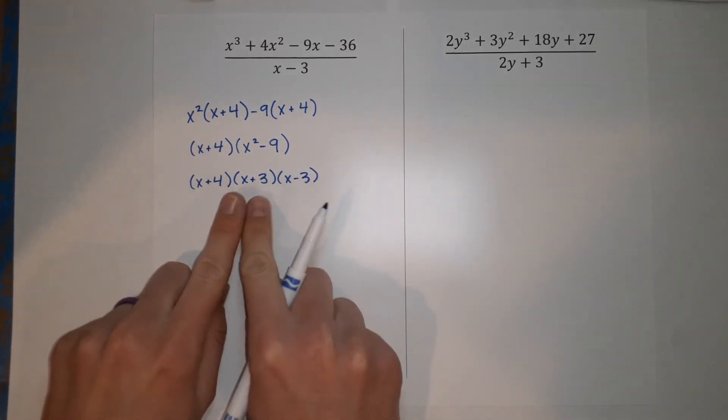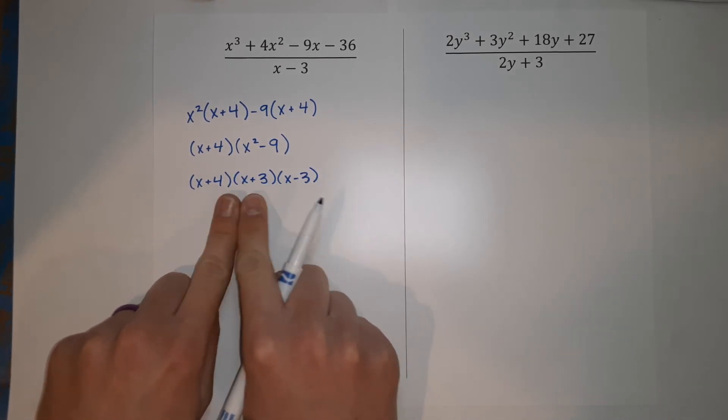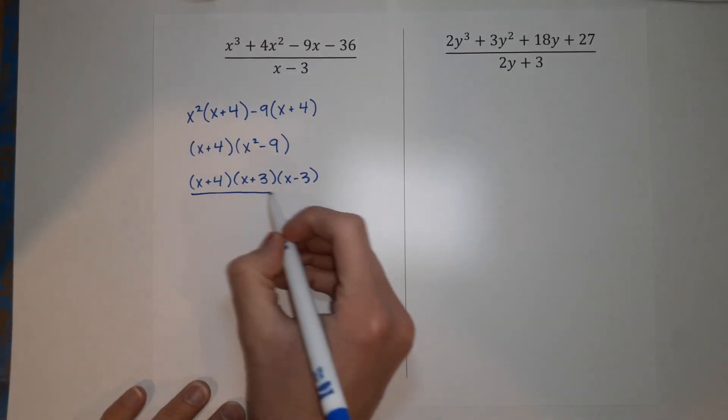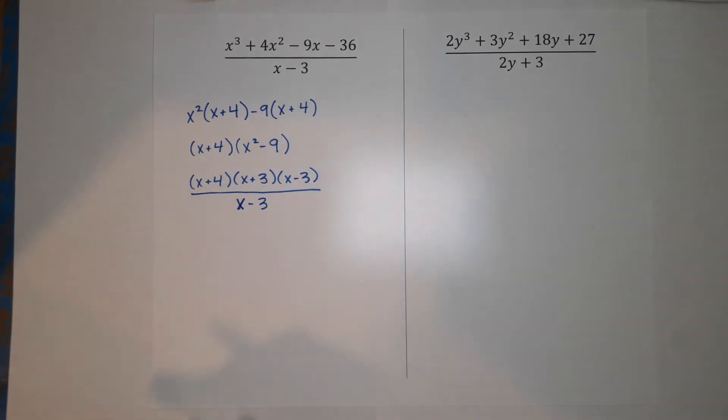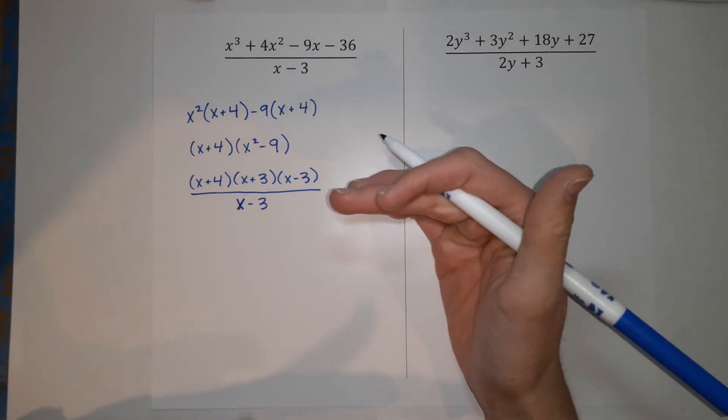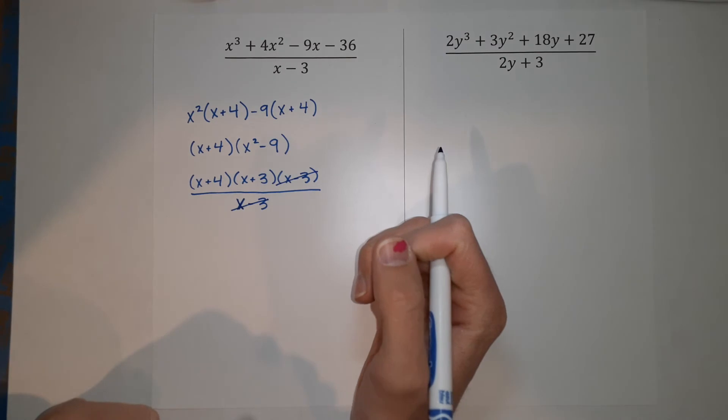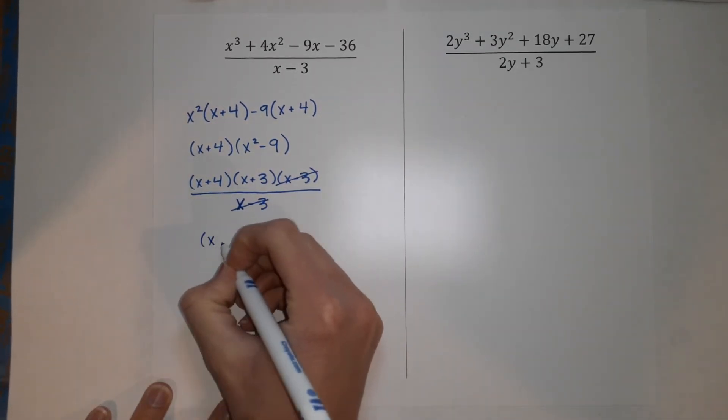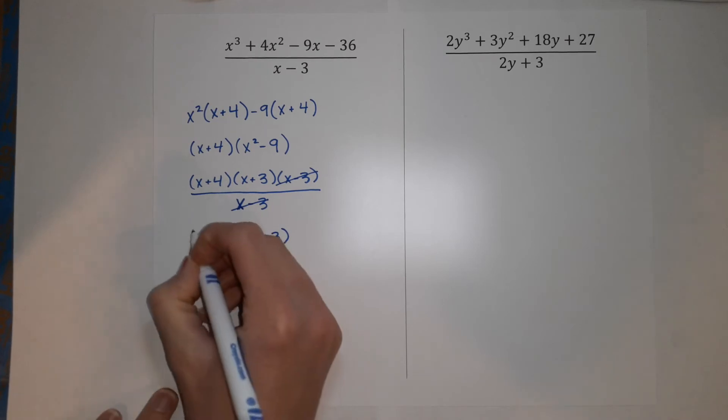So that was my numerator, my top number, and now it is all the way factored. If I were to multiply these together, I would get this guy. So this is now this. So this whole thing is over x minus three. Now we are simply crossing out the things that are the same, right? So x minus three over x minus three leaves me with just one. So those cancel. So what I'm left with is x plus four times x plus three. And that is your answer.